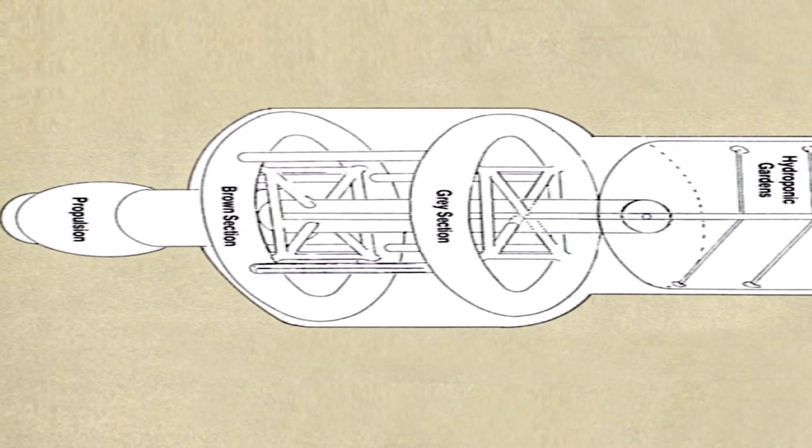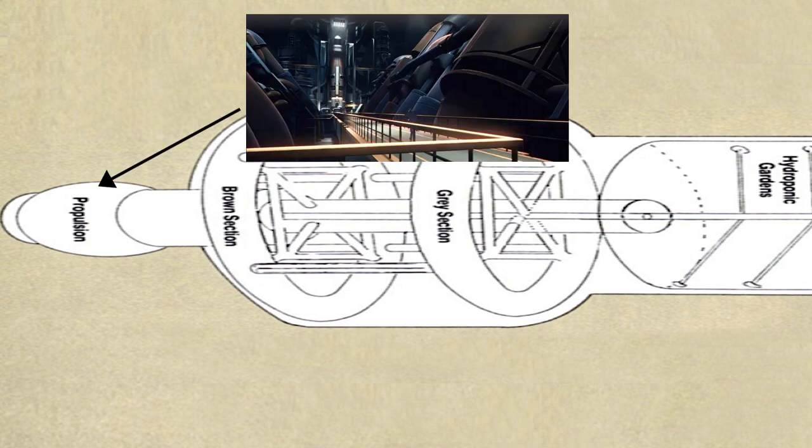At the rear of the station is the yellow sector which contains the primary fusion core and the fuel tanks. There's also no rotation section in this area which means all maintenance must be done in zero gravity.